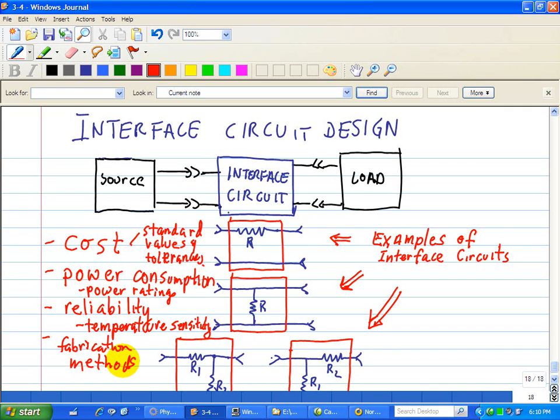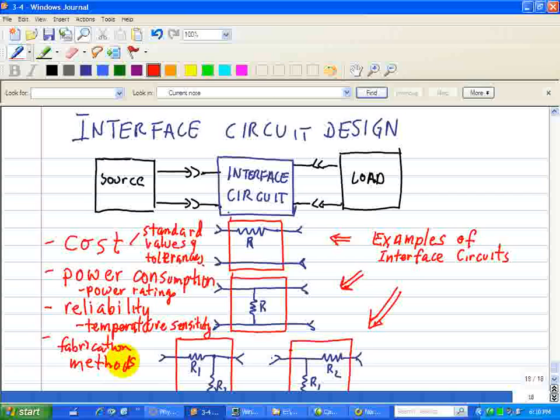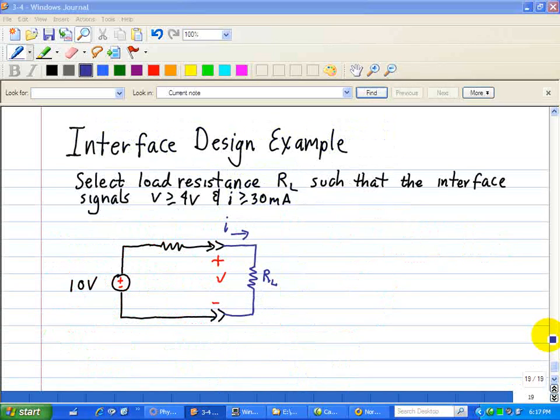We will occasionally introduce some of these considerations into our design examples. Gaining a full understanding of these practical matters is not one of our objectives. Rather, our goal is simply to illustrate how different constraints can influence the design process. Let's consider the following interface design example.